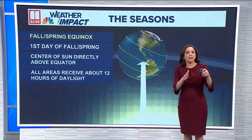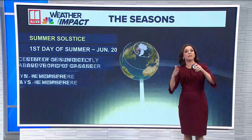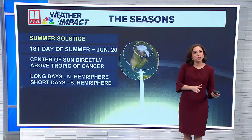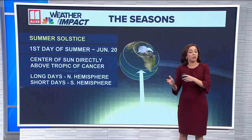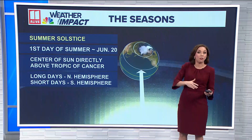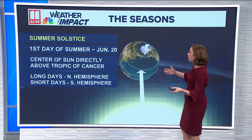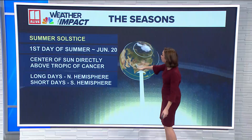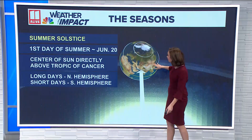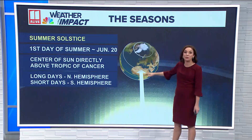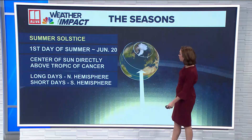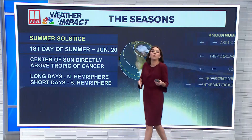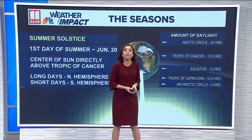Now when we have the winter solstice and the summer solstice, that's when the sun is at its furthest point north or south on the earth. So the first day of summer — the summer solstice for us — that's when it's over the Tropic of Cancer and we see our longest hours of daylight here in the northern hemisphere. Meanwhile, in the southern hemisphere, that's when they have wintertime.